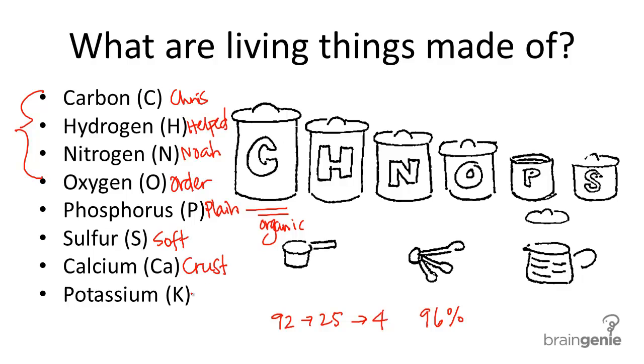And so this mnemonic is a little long, but it's fairly useful because not only does it tell you the first letter of each of the elements, it also gives it to you in the order of largest to smallest percentage in living matter. So remember these elements and keep a lookout for them while you study bio.